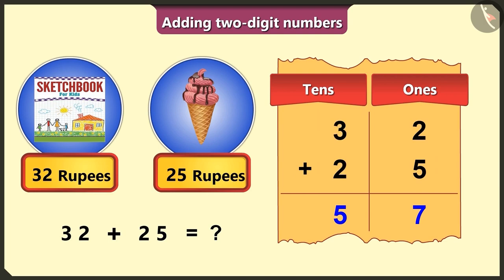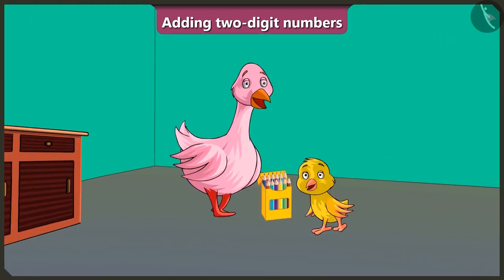So, Auntie, you have to give me a total of fifty-seven rupees. That's great, Bilu. You made the right calculation.